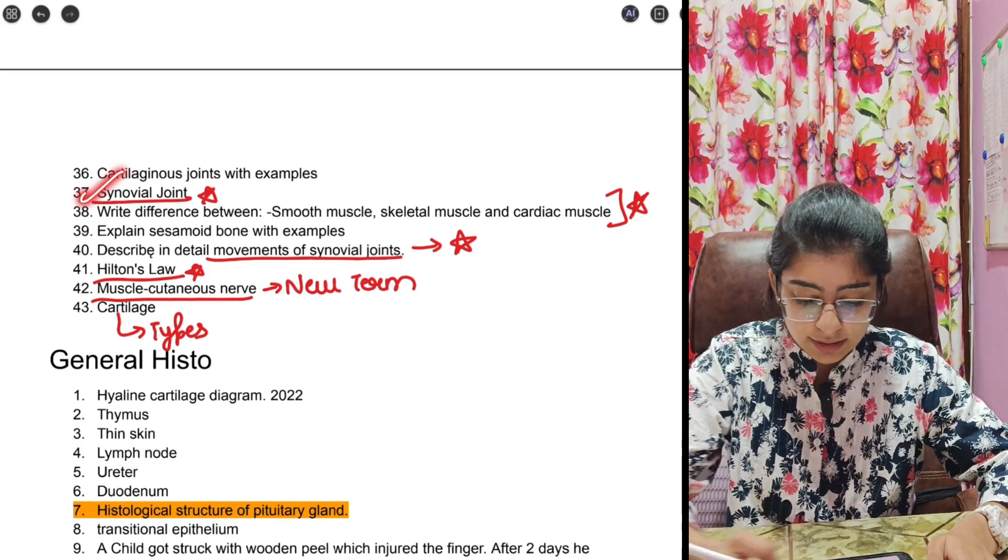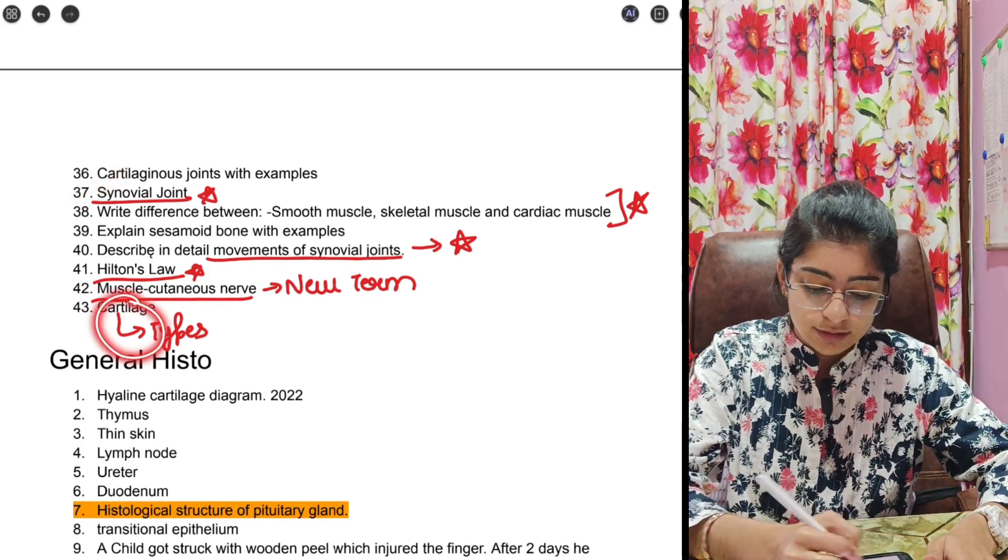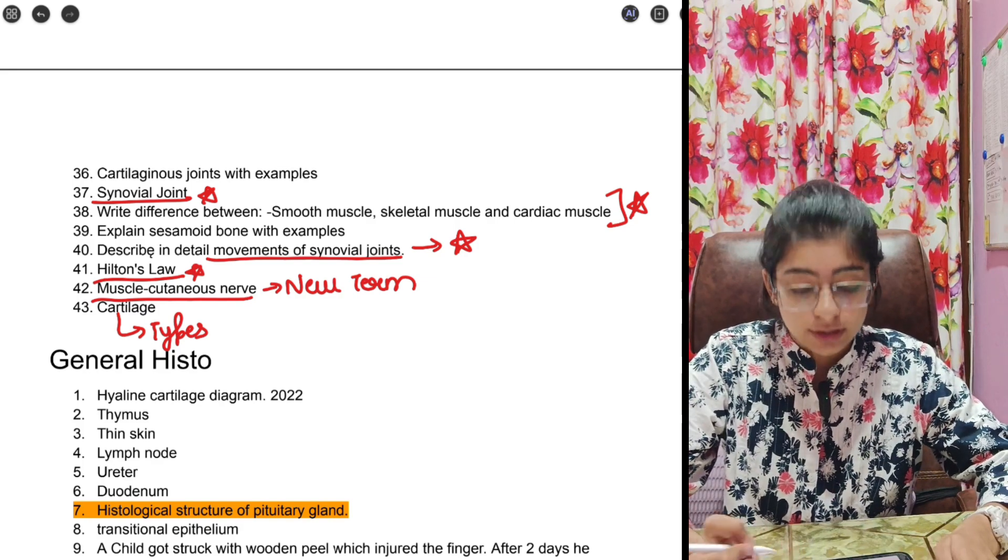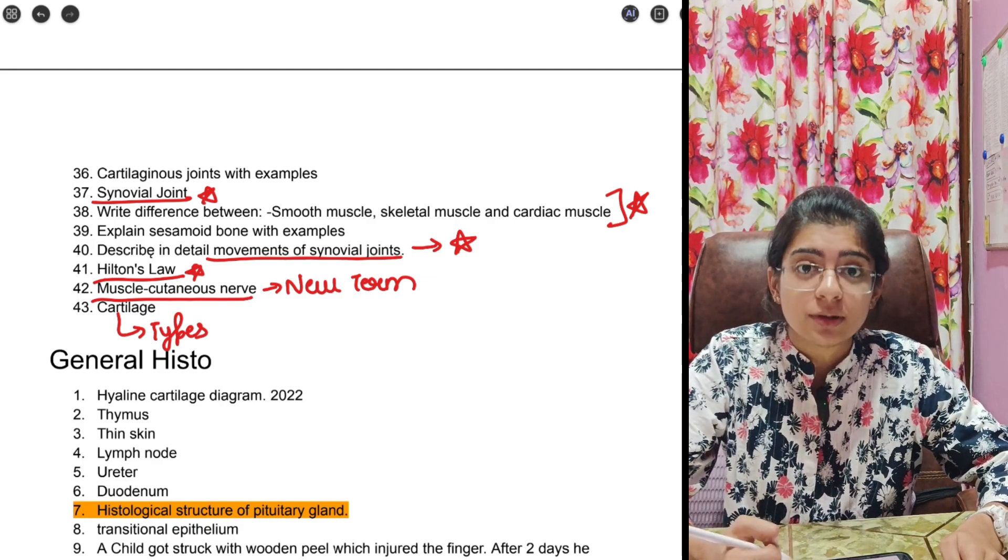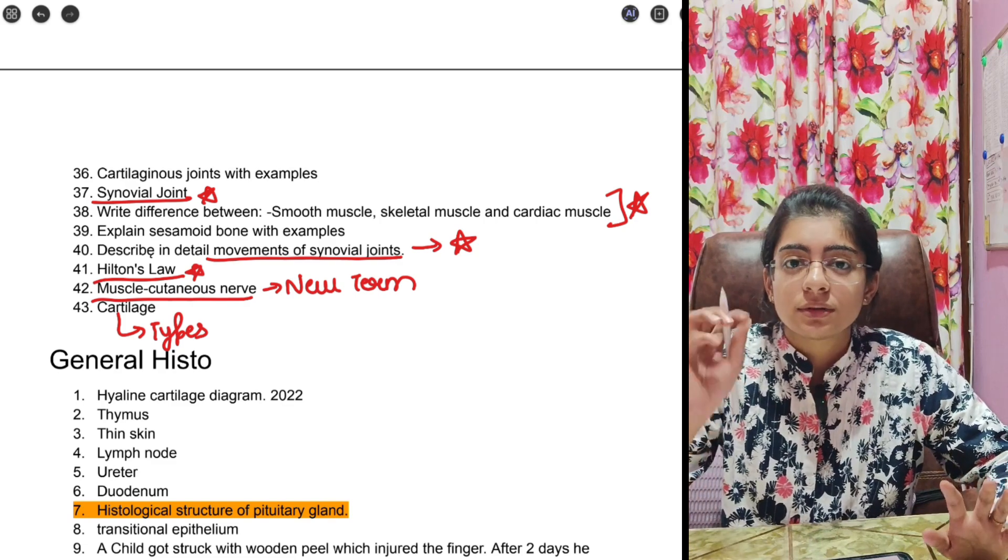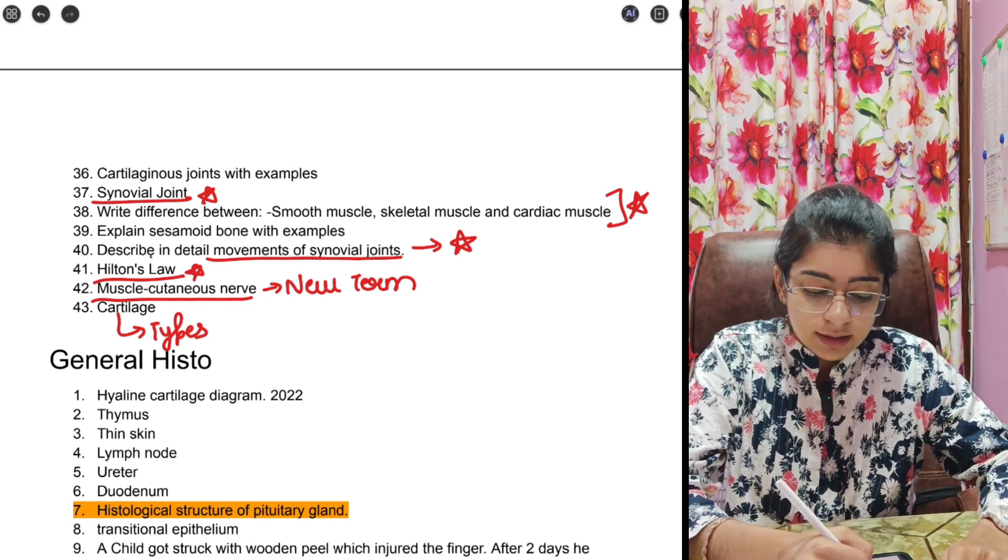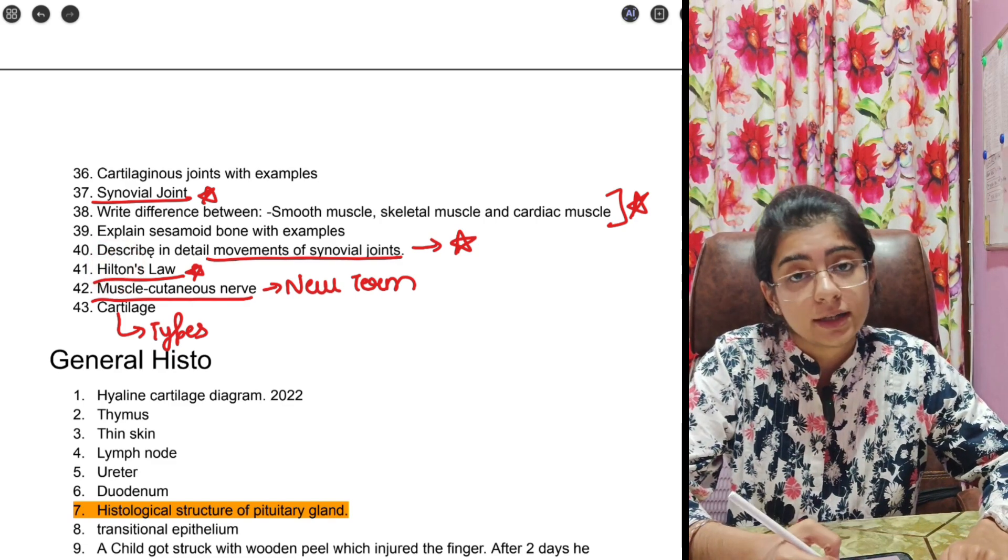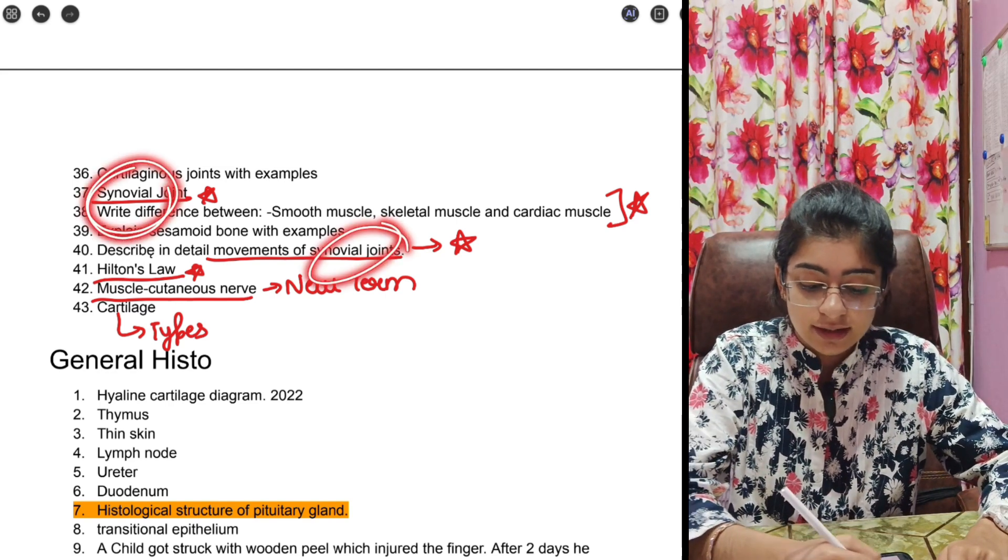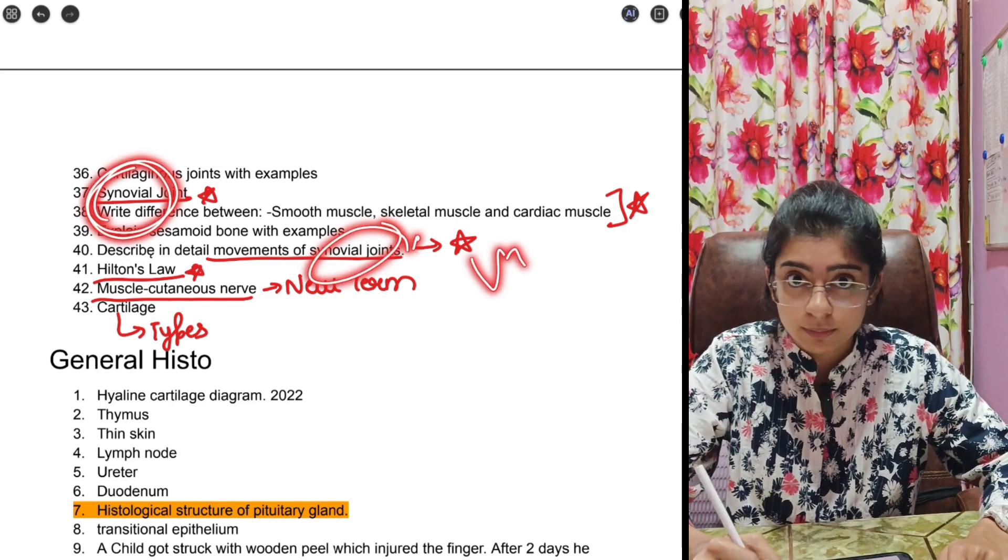Next is synovial joint and then cartilage types. Musculocutaneous nerve is a new term, you need to search about that because sometimes we just miss the term, what is that, we don't know, so there we lose some marks.